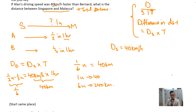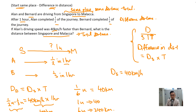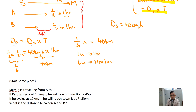So 240 kilometers is the distance between Singapore and Malacca. To review: when doing a distance speed time question, write down the formula triangle. Identify the question type — this is a difference in distance question. Draw the model: Singapore to Malaysia is one u. Alan completed half in one hour; Bernard completed one third in one hour. The difference is one sixth unit. Difference in speed is 40, time is one hour. One sixth unit equals 40 kilometers, one unit equals 40, six units equals 240 kilometers.